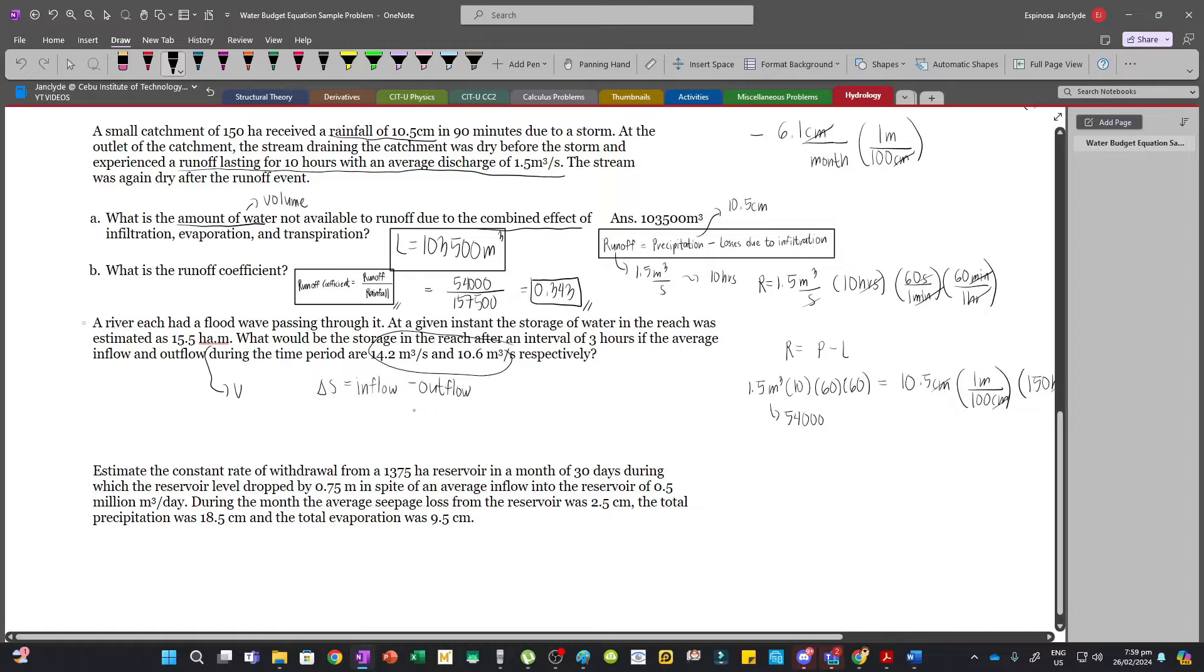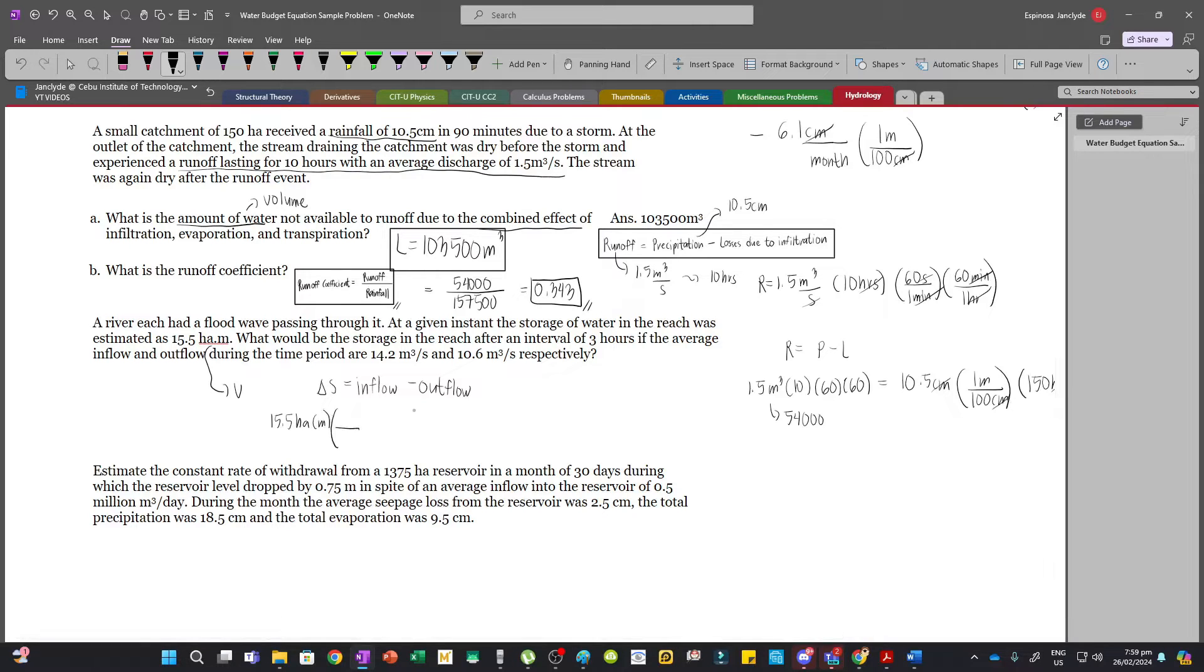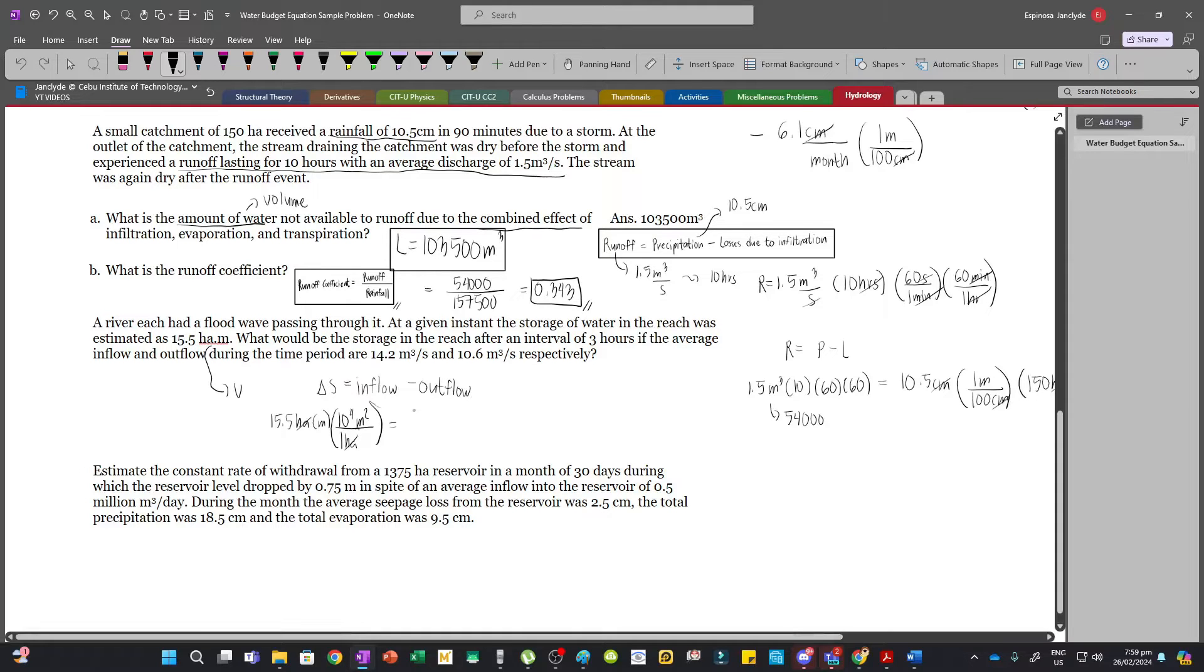So we have our delta s is 15.5 hectare times meter and then 1 hectare is equal to 10 to the 4th meter squared. And so these will cancel and then we have inflow minus outflow. However, this is the initial storage.